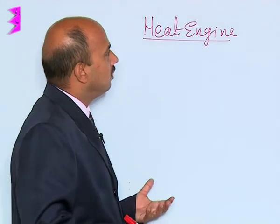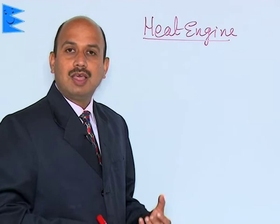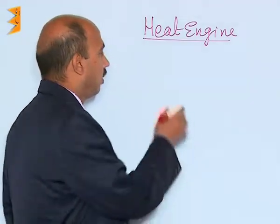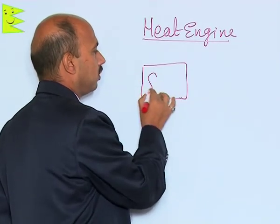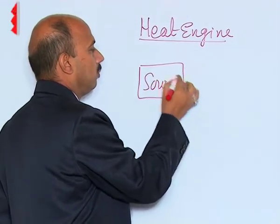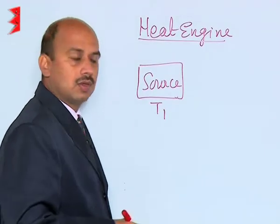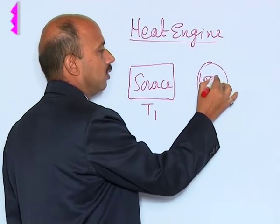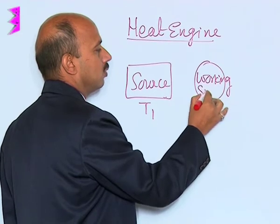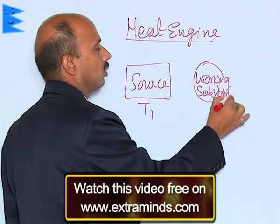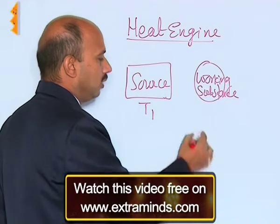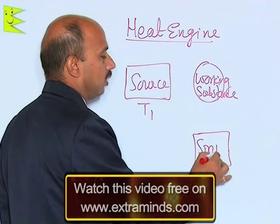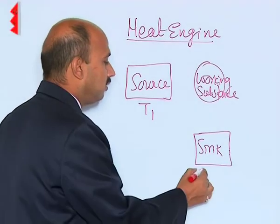Now we have to see how a heat engine works and what is its efficiency. A heat engine has three main parts. The first one is the source, which is at temperature T1. Then we have the working substance. And then there is the sink, which is at temperature T2. These are the three parts of the engine.